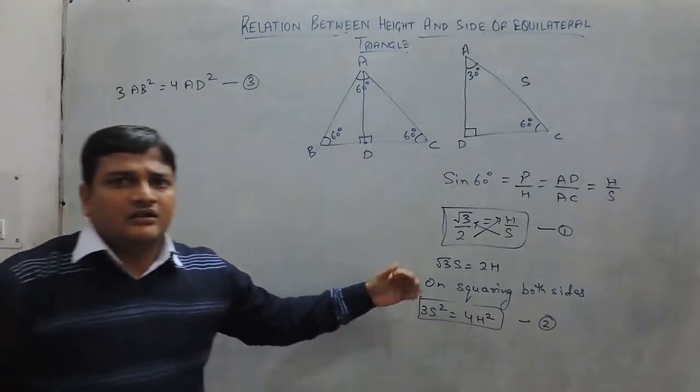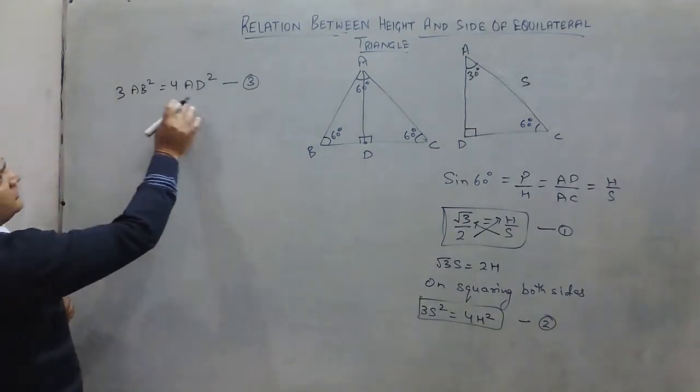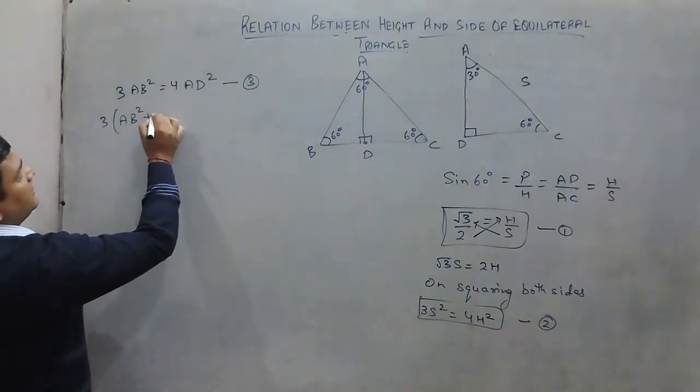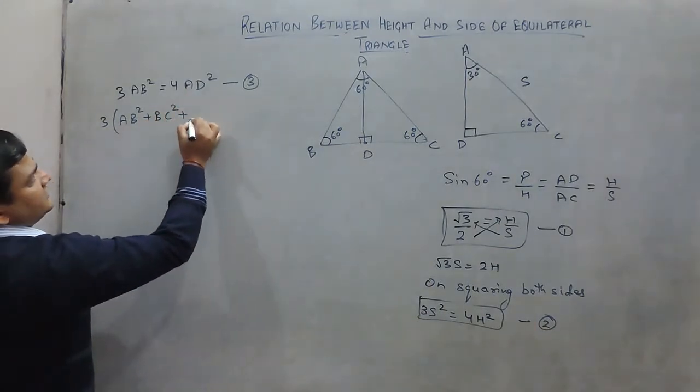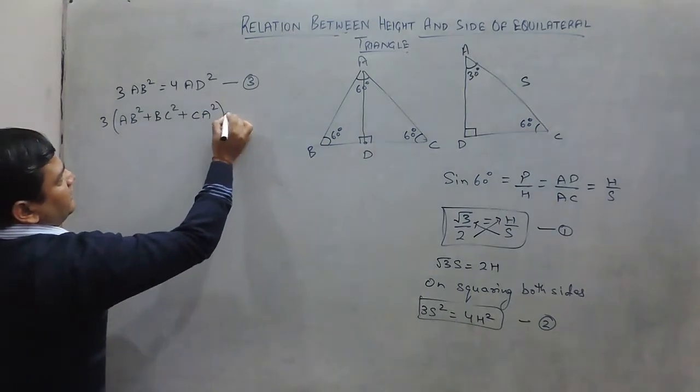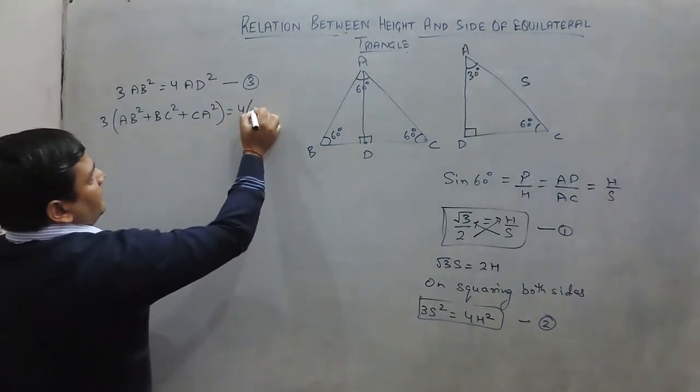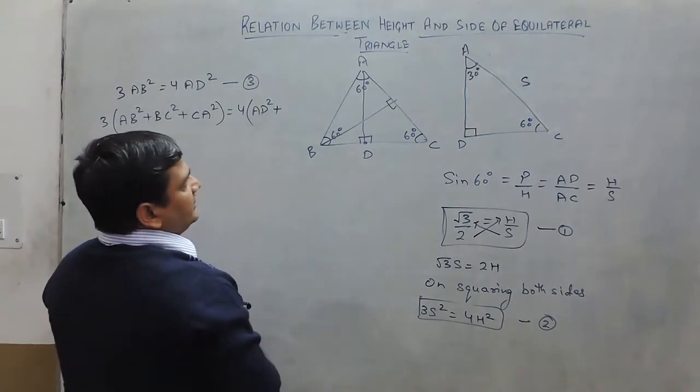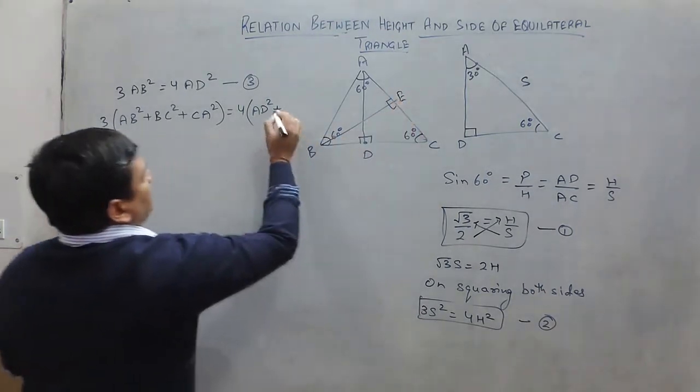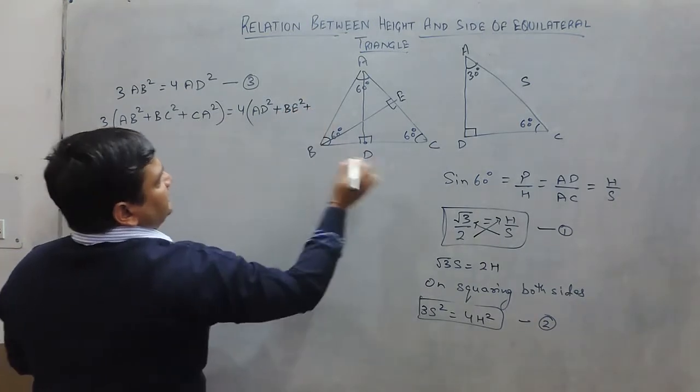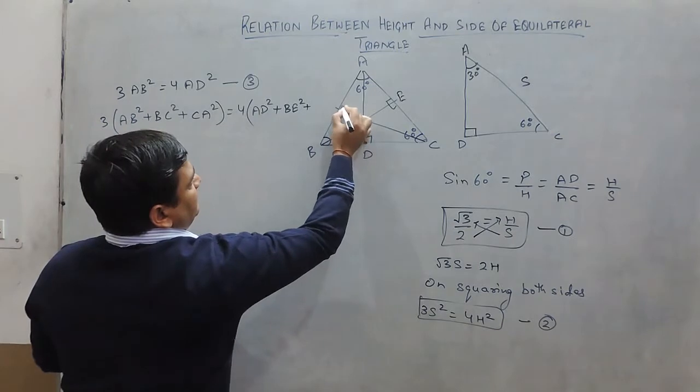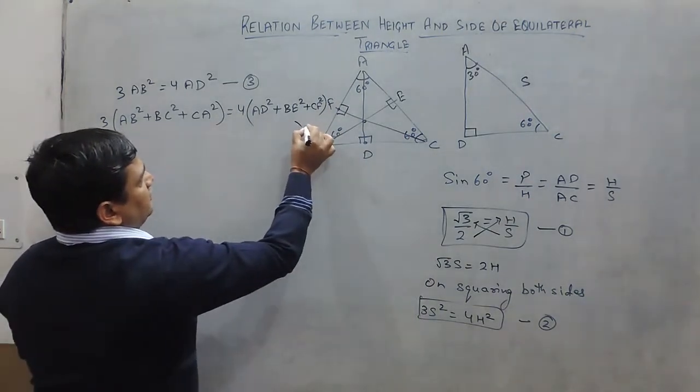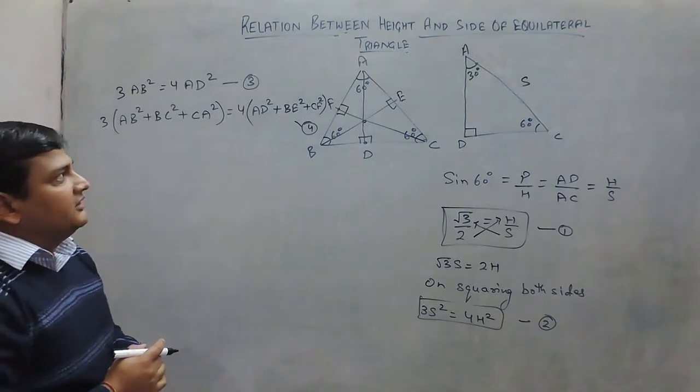These types of relations appear in examinations. We can also write it as 3 times (AB square plus BC square plus CA square) equals to 4 times (AD square plus BE square plus CF square), where AD, BE, and CF are the three heights of the equilateral triangle. This is also a relation between height and side of an equilateral triangle.